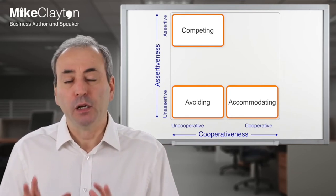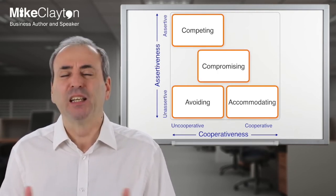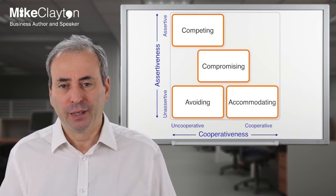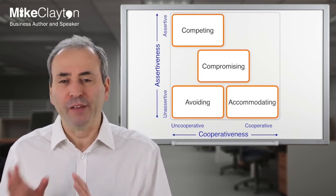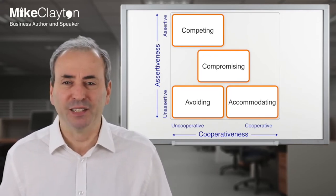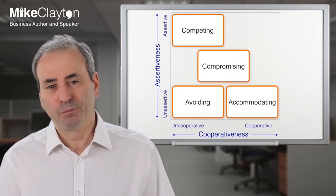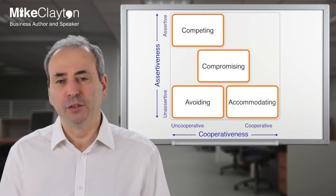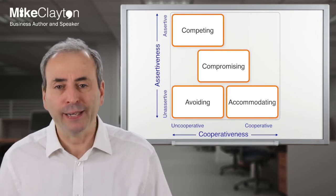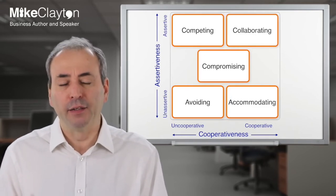In the middle of the Thomas-Kilman conflict modes chart is compromise. It's kind of like a draw — neither side wins but neither side loses either; both sides give up something. Compromise works if both sides feel that what they've given up is fair because the other side has given up something similar. It does little to build the relationship but doesn't damage it too badly, and it does little to give you what you really want but gives you enough. Compromise is the perfect solution if both outcome and relationship are important but not important enough to work really hard.